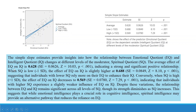The average effect of EQ on IQ is 0.628, indicating a strong and significant positive relationship. When SQ is low — at minus one standard deviation — the effect of EQ on IQ is slightly higher at 0.688. This value increases and is also significant, suggesting that individuals with lower SQ rely more on their EQ to enhance their IQ.